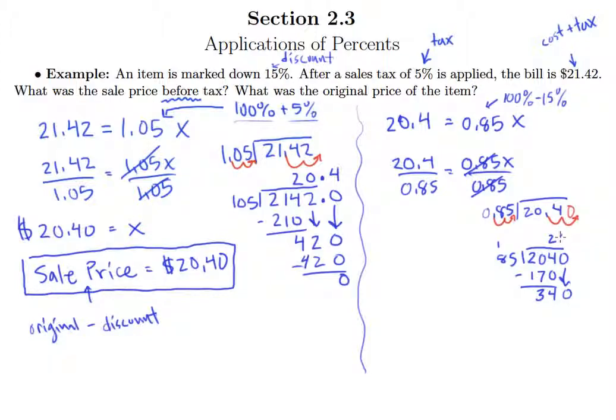85 goes into 340, how many times? I'm thinking 4 times. 4 times 5 is 20. Carry the 2. So exactly 4 times. So we get that our x is $24. So the original price is equal to $24.